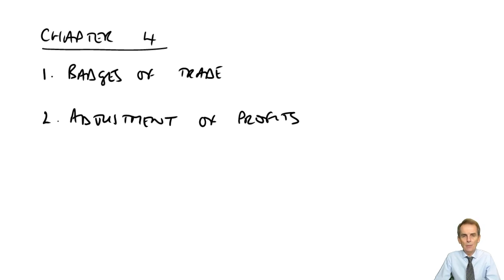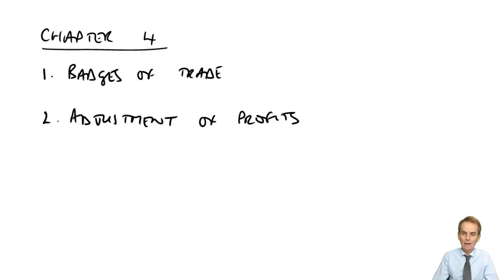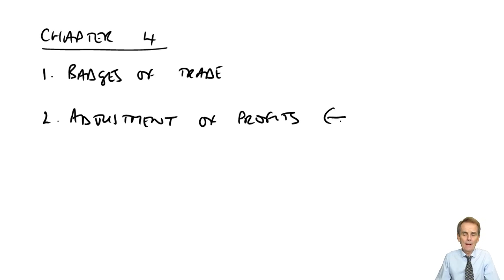There are a number of problems that have to be dealt with in getting that assessment onto that particular tax year's income tax computation. Those problems are firstly dealt with here in Chapter 4 in terms of making the accounting profit the basis of establishing what profit on the business is to be charged to tax — making the accounting profit acceptable for taxation purposes. The vast majority of the work in this chapter is based on the second section, Adjustment of Profits, and will always feature in every examination. It's a fundamental issue so far as our syllabus is concerned.